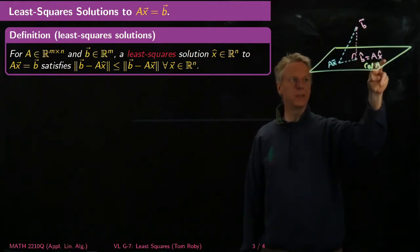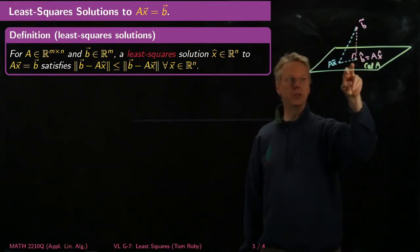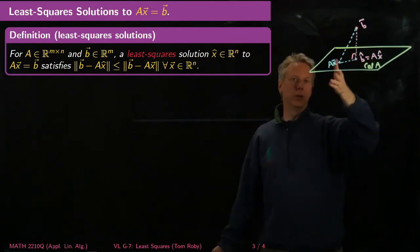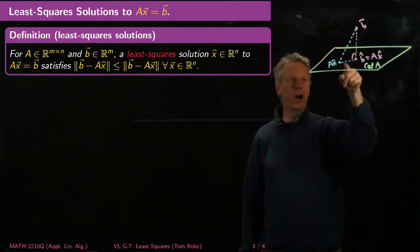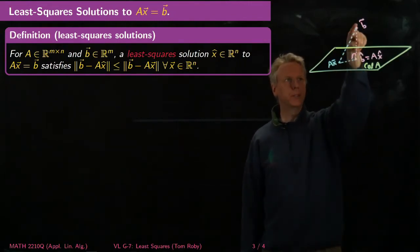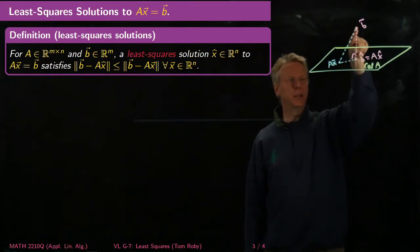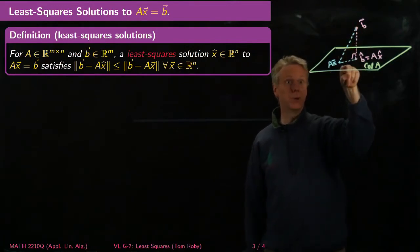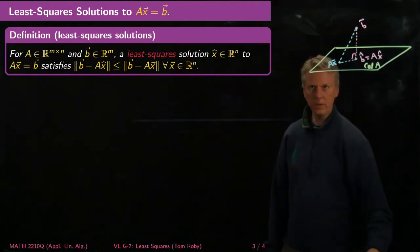So the natural thing to do is to project B down into this subspace and say, okay, that's the closest point I can get to. Because this is in the column space, now I know there's some X hat which, when I apply A, gets me to B hat. And then by the least approximation theorem, any other point on the column space is going to be further away because its distance is going to be the square root of the sum of the squares of those distances.